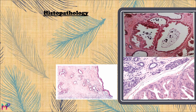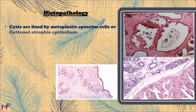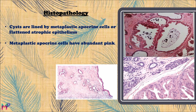On histopathology, the blue dome cysts formed in fibrocystic change are lined by metaplastic apocrine cells or flattened atrophic epithelium. There occurs metaplasia of the normal epithelium of the terminal duct, acini, or lobule of the breast. These metaplastic apocrine cells differ from normal epithelium; they have abundant pink cytoplasm and rounded nuclei.